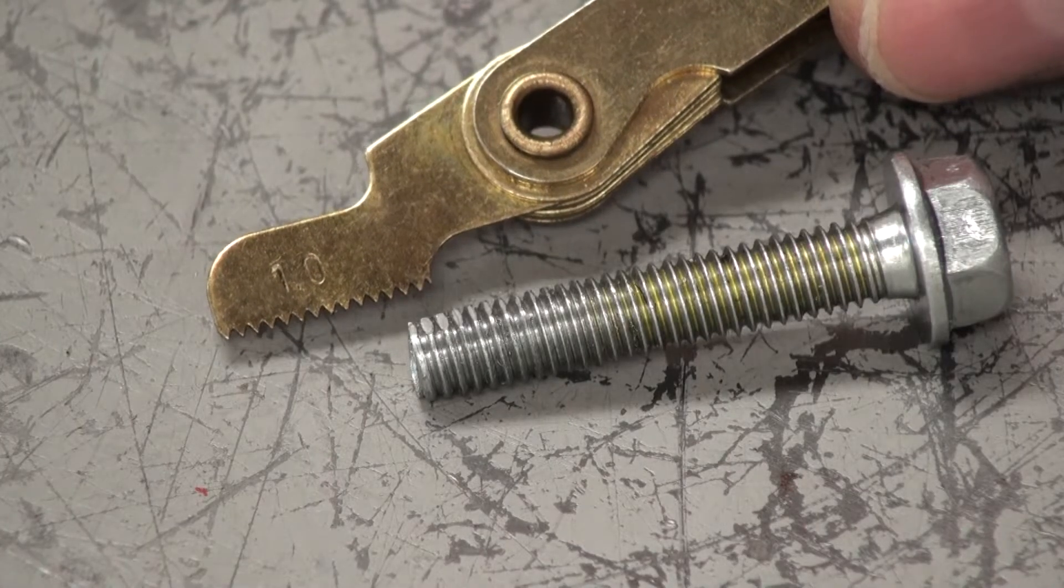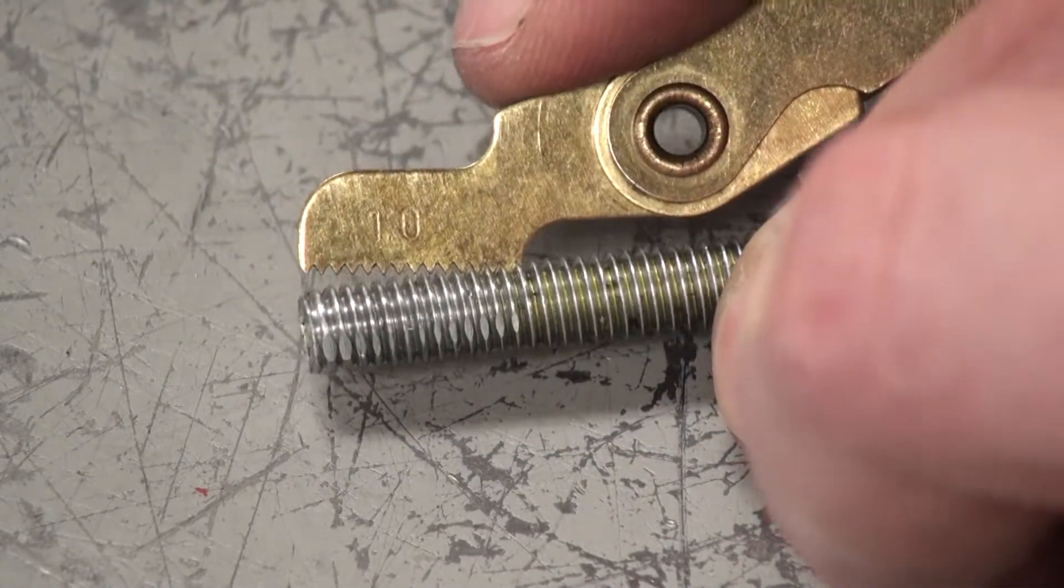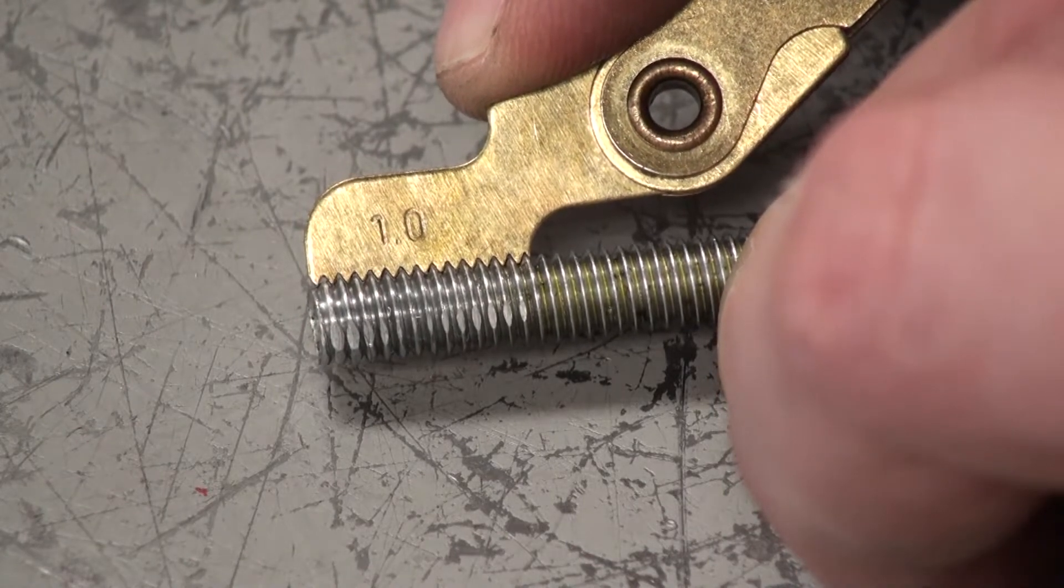First we're going to make sure that threads are the right pitch for the tap and die we plan on using. To do that we're going to use this pitch measurement tool. You can see the 1.0 measurement fits perfectly with the threads of the bolt.